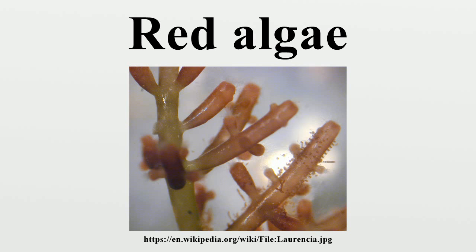Life cycle. They display alternation of generations. In addition to a gametophyte generation, many have two sporophyte generations: the carposporophyte producing carpospores, which germinate into a tetrasporophyte.